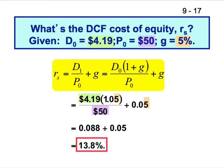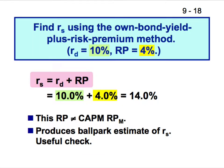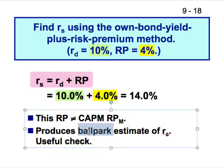The CAPM gave 14.2% and the DCF gave 13.8% — they're in the neighborhood. For the own-bond-yield-plus-risk-premium approach, equity is riskier than bonds, and if you can calculate the cost of bonds even for a non-public company, you add a risk premium of three to five percent — giving about 14%. That produces a ballpark estimate, and it'll be a group of senior directors sitting in a conference room accepting a number.